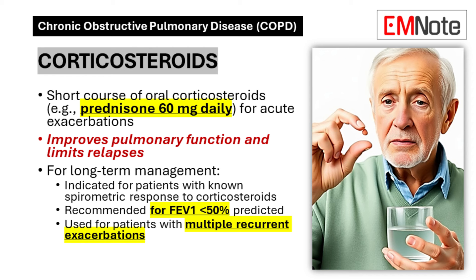Corticosteroids play a vital role in both acute and chronic management of COPD. During exacerbations, a short course of oral corticosteroids such as prednisone 60 mg daily can significantly improve pulmonary function and reduce the risk of relapse. In the long-term management of COPD, inhaled corticosteroids are indicated for patients with a documented spirometric response or those with FEV1 below 50% predicted who experienced recurrent exacerbations. This approach balances the anti-inflammatory benefits against potential systemic side effects.